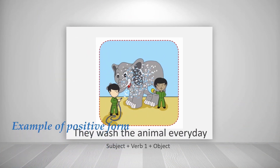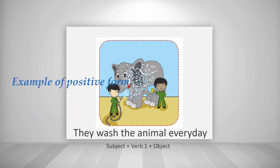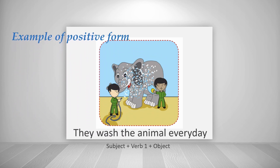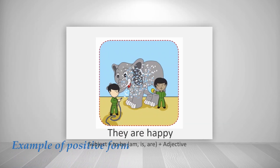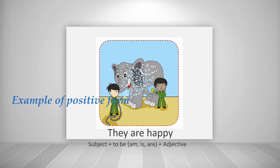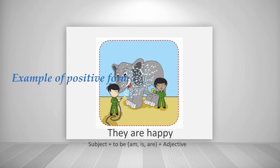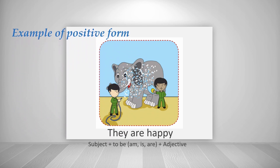Look at the examples of positive form. 'They wash the animal every day' — this sentence consists of subject + verb 1 + object. The second example: 'They are happy' — the subject is 'they,' using 'are' as a to-be verb, followed by an adjective.